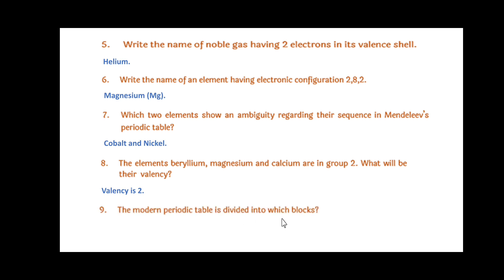The modern periodic table is divided into which blocks? That is S block, P block, D block, and F block. What determines the chemical reactivity of elements? The chemical reactivity of an element is determined by the number of valence electrons in it and the shell number of the valence shell.